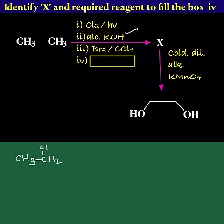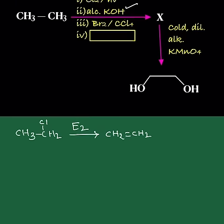Next it is treated with alcoholic KOH, that is used for dehydrohalogenation. So that is E2 mechanism, bimolecular elimination reaction.